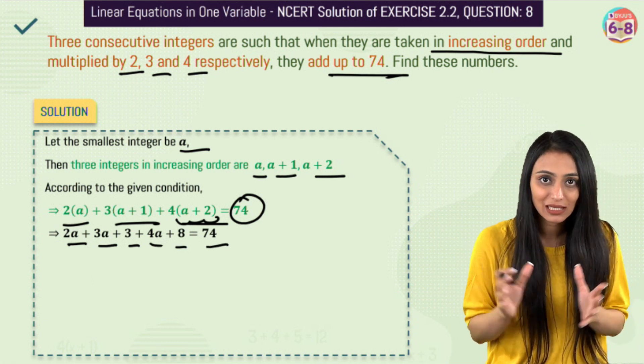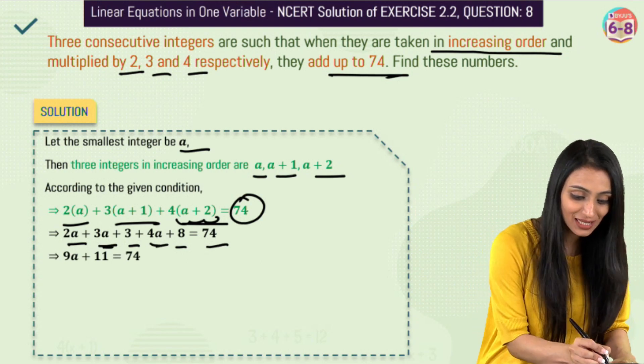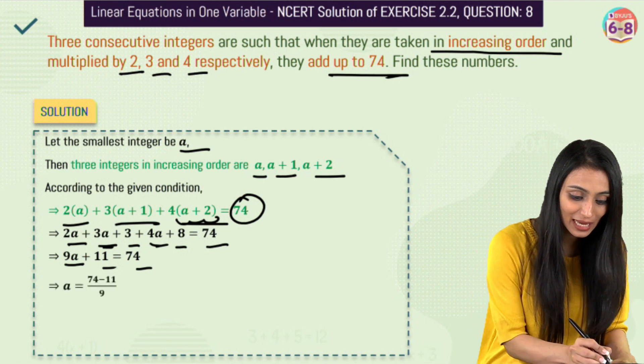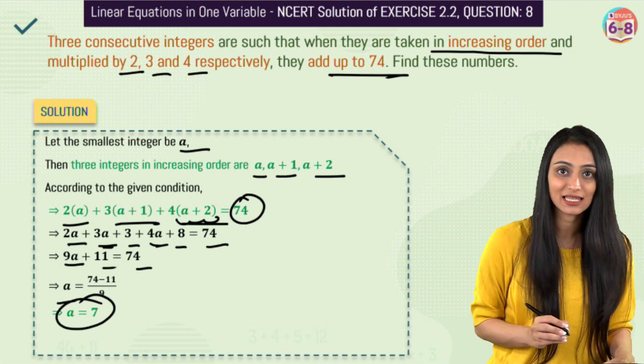Now we are going to add up the like terms together. So we have 2a, 3a plus 4a, that's going to be 9a. 3 plus 8 is 11 equals to 74. So we have a equals to 74 minus 11 upon 9. So we get the value of a from here. That's 7.